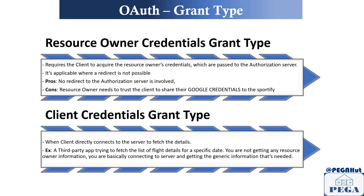The last one is the Client Credential grant type. The client has a client ID and secret because they would have registered beforehand. They share the client ID and secret to Google to try to fetch information. This grant type is used in scenarios like a third-party app fetching a list of flight details for a specific date — they are not getting any personal information of a resource owner; they are doing something else entirely and do not need the resource owner's authorization. This is the scenario where you go with the Client Credential grant type.